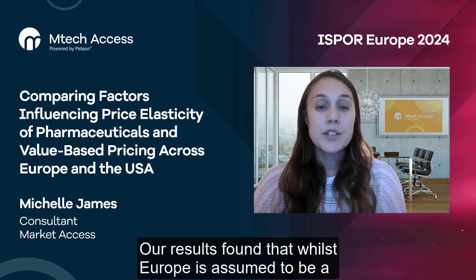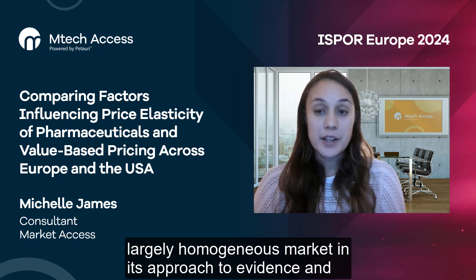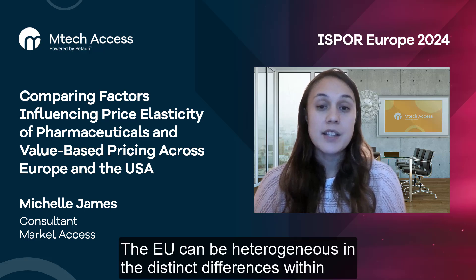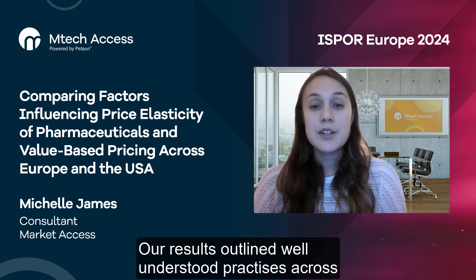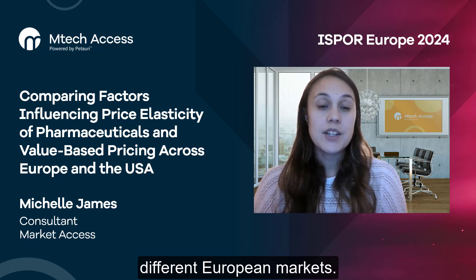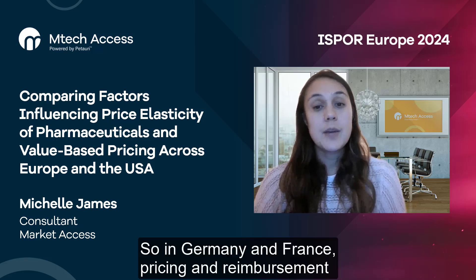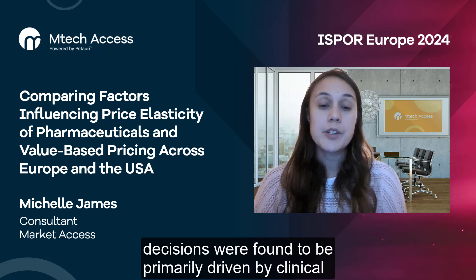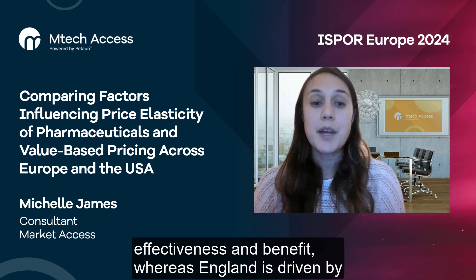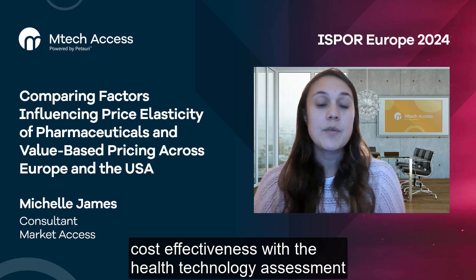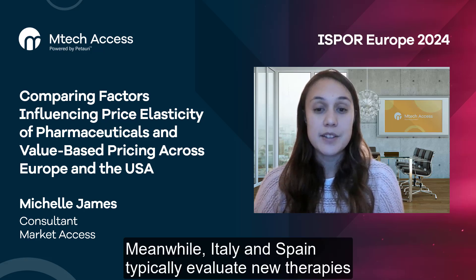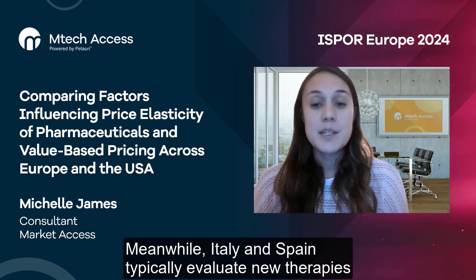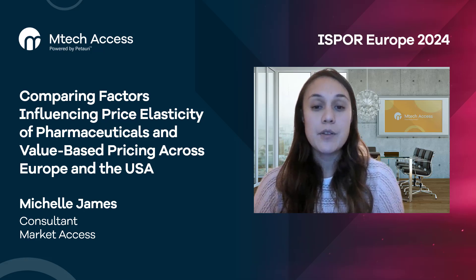Our results found that whilst Europe is assumed to be a largely homogenous market in its approach to evidence and value-based pricing policies, the EU can be heterogeneous in the distinct differences within their individual value-based processes. In Germany and France, pricing and reimbursement decisions were found to be primarily driven by clinical effectiveness and benefit, whereas England is driven by cost effectiveness, with the health technology assessment process relying on quality-adjusted life years. Meanwhile, Italy and Spain typically evaluate new therapies based on their overall budget impact.